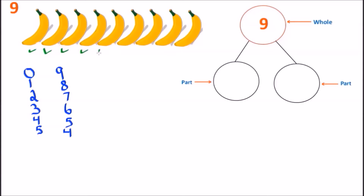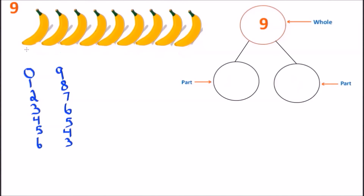Keep counting: one, two, three, four, five, and six — we have the number six. How many bananas are remaining? One, two, and three — we have three. Before we had a three and a six; now we have a six and a three. Six on the left side, three on the right side — two different number bonds, three-six and six-three, but they both give us the number nine.